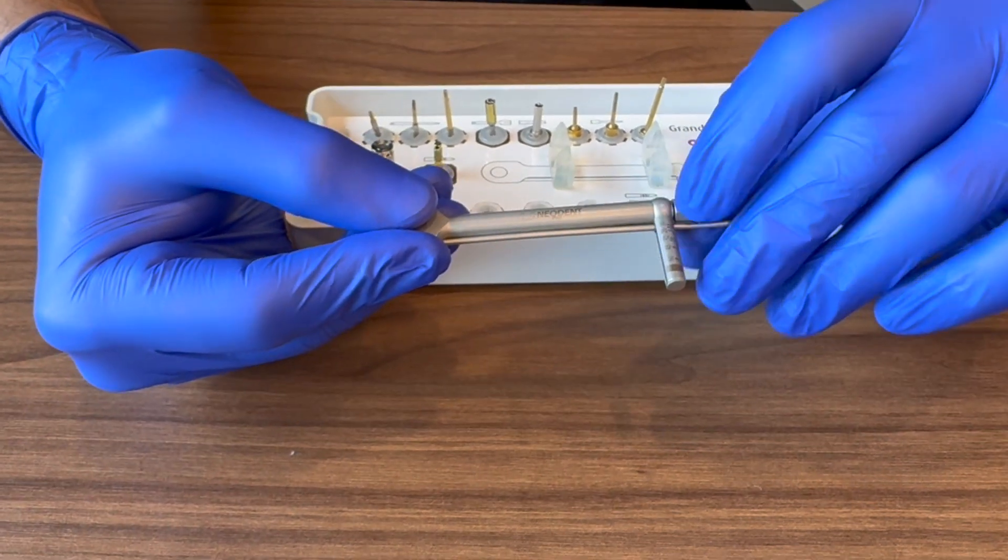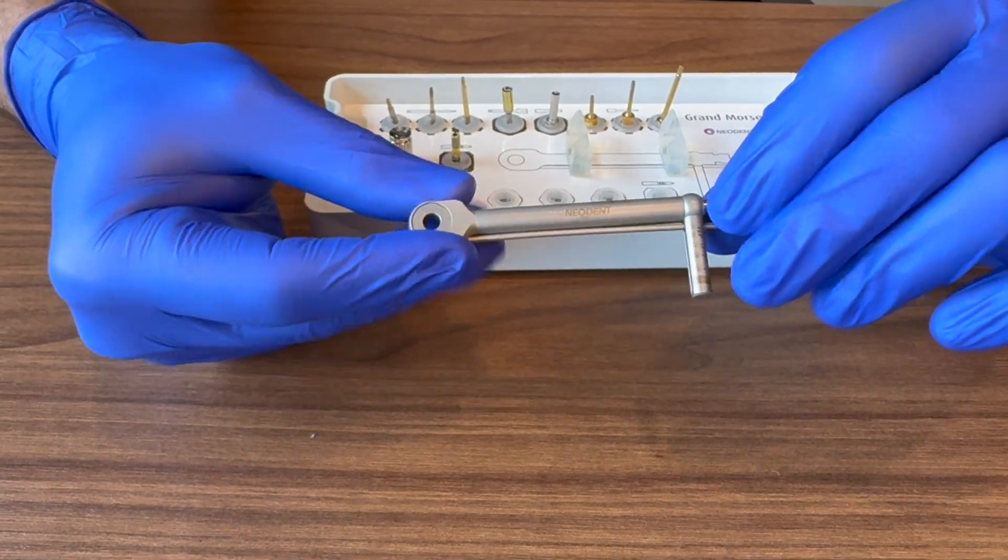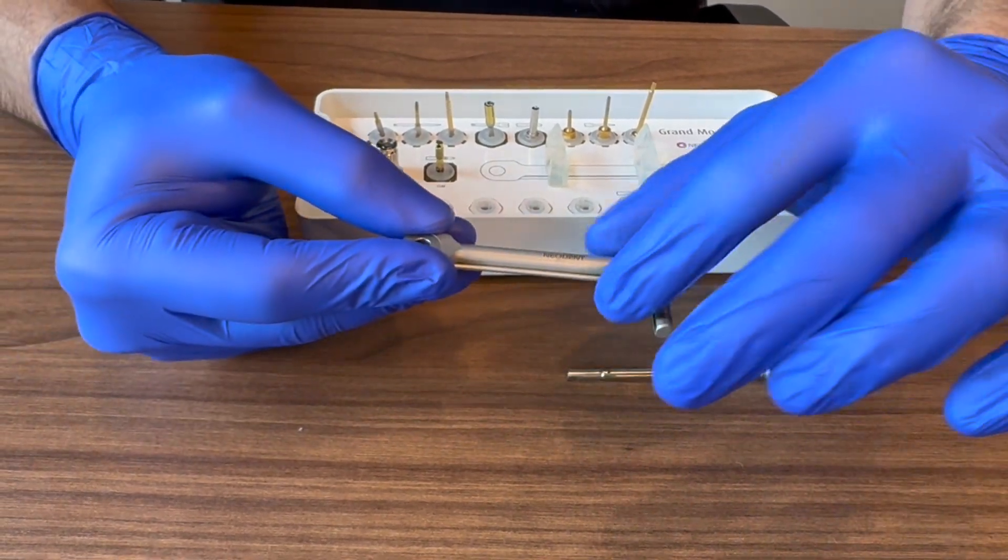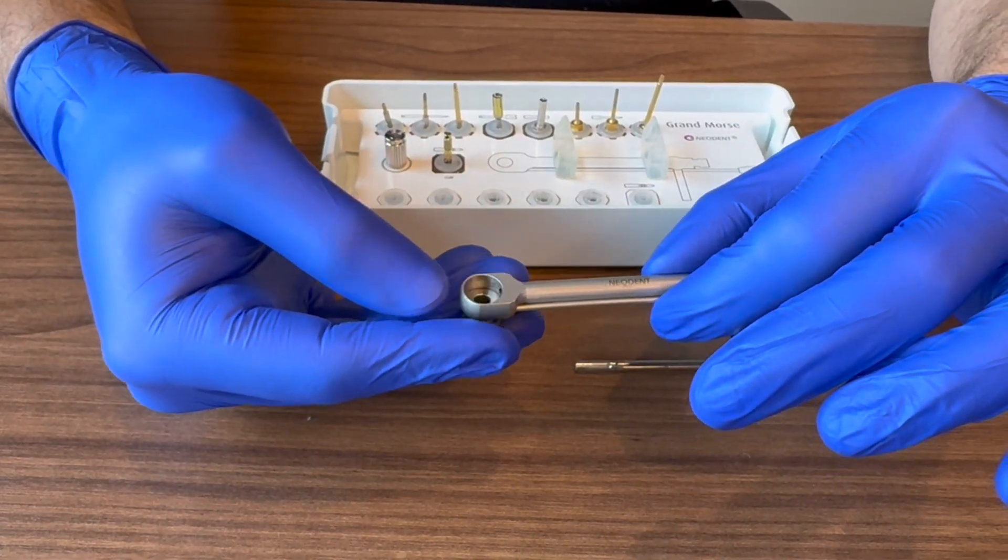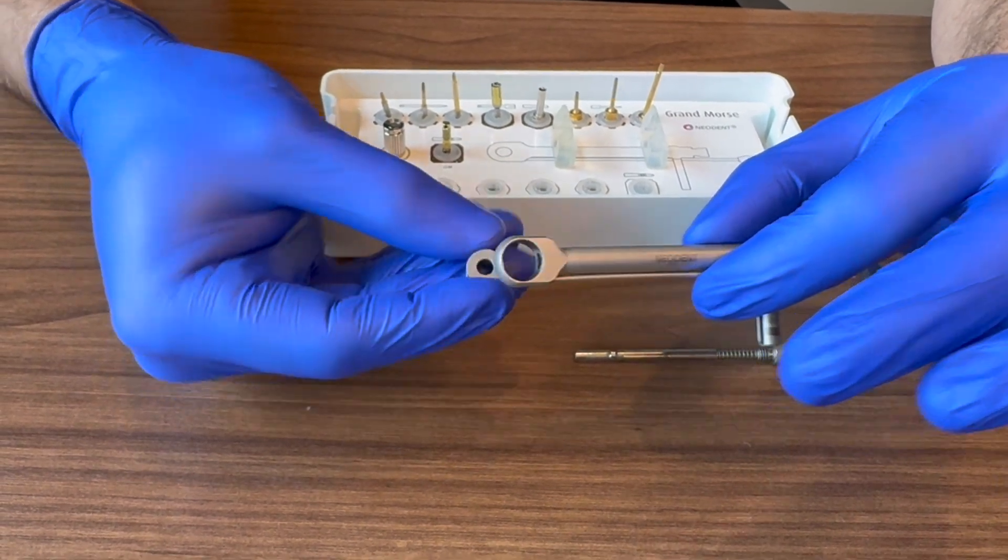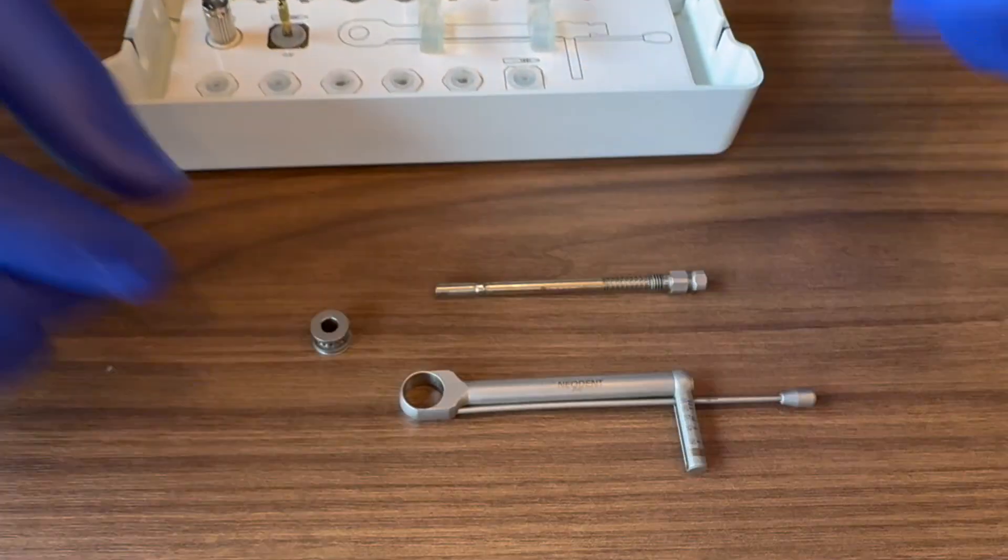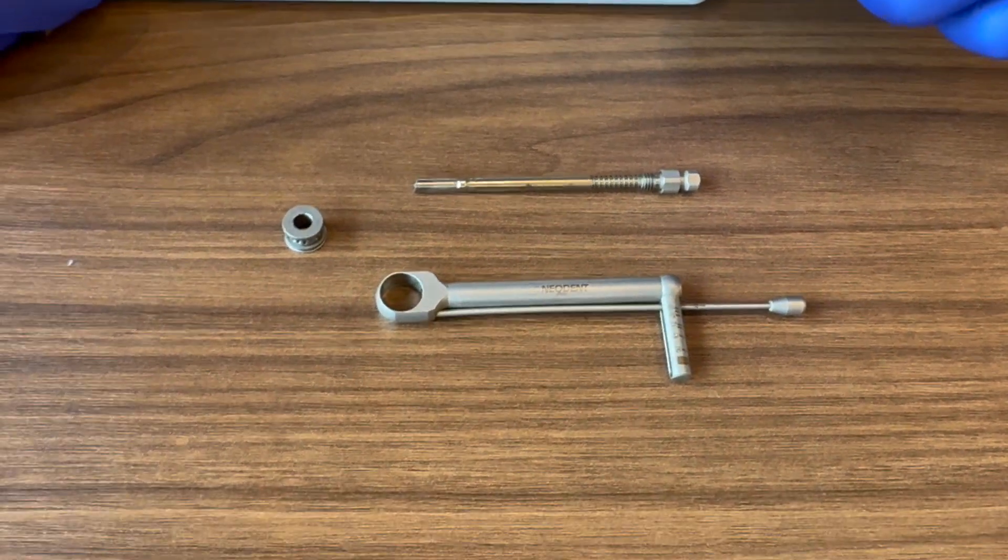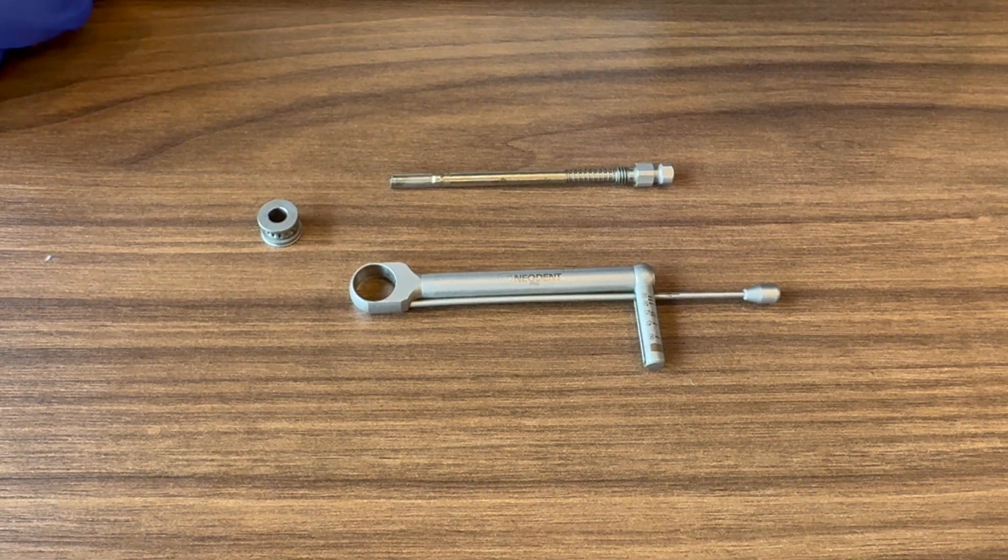So first of all, let's take this thing apart. You unscrew this, a rod will come out. This is absolutely necessary for sterilization and then another component will come out right here. As you can see there's three pieces to this. All three of them need to be separated before we run it through sterilization, making sure we get anything out of any nooks and crannies.